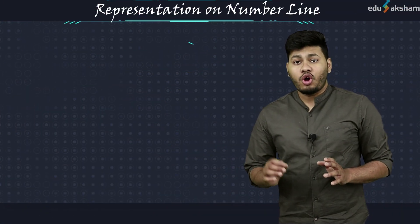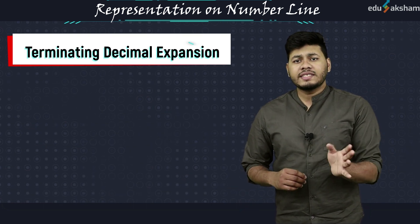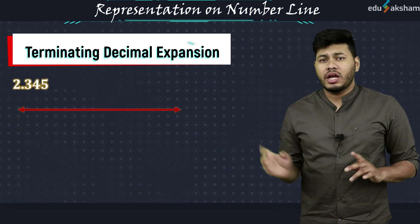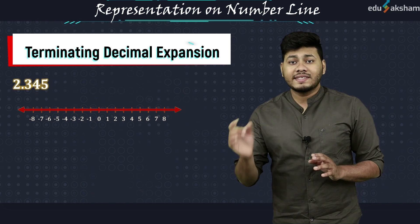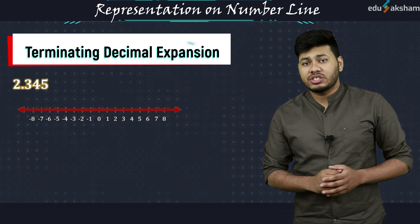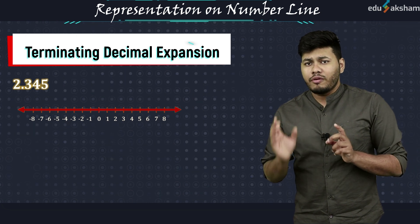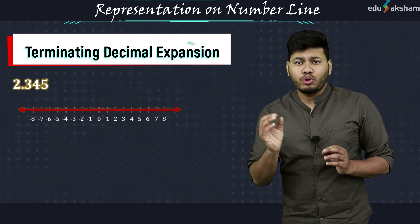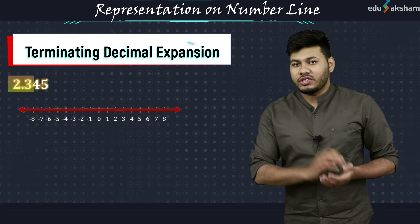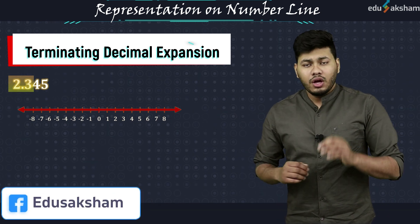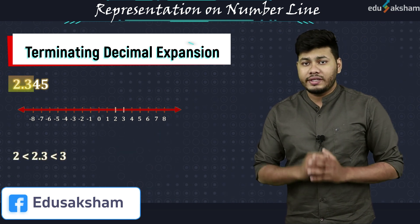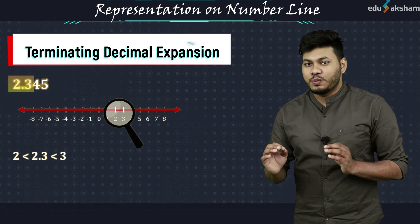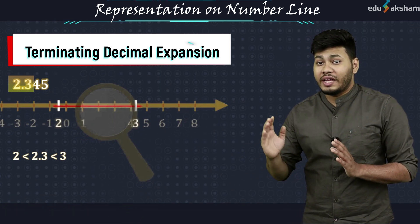We will begin with the example of a terminating decimal expansion. Let us take the number 2.345. If we have to plot it on the number line, first we will check where this number lies. Right now we can see integers on the number line, so this number must lie between any two integers. We will consider this number up to the first decimal place — let us take 2.3 initially. We know that 2.3 lies between 2 and 3, so we will magnify this portion and divide it into 10 equal parts.